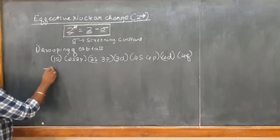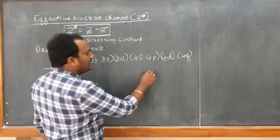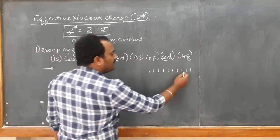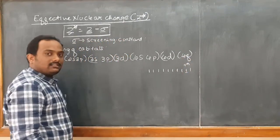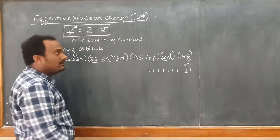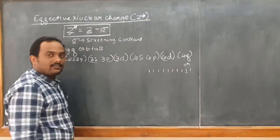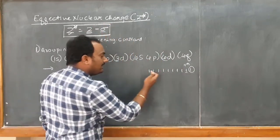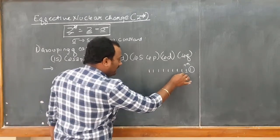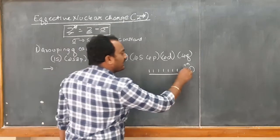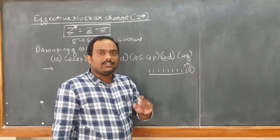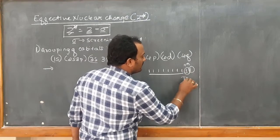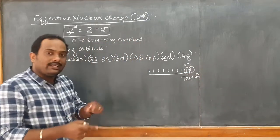The electron for which you want to find the screening constant is called the test electron. For example, if there are 10 electrons and you want to calculate for the 9th electron, the electrons to the right side of the test electron have no effect at all. The screening effect or effective nuclear charge is produced only by the electrons present inside — meaning we consider only the electrons to the left of the test electron.